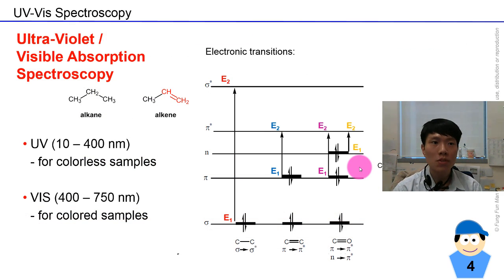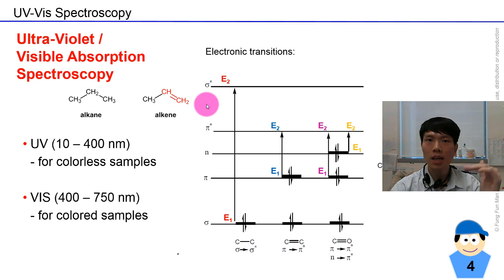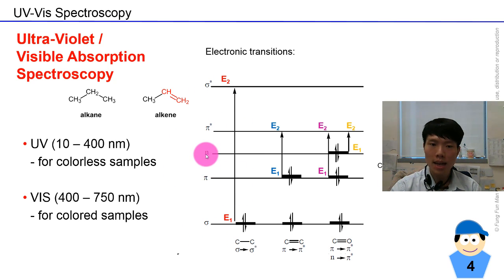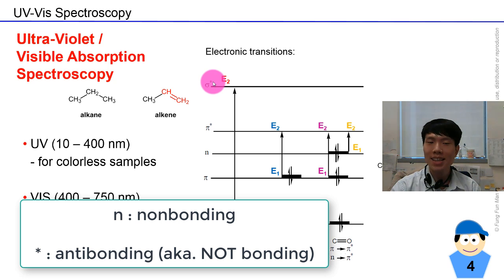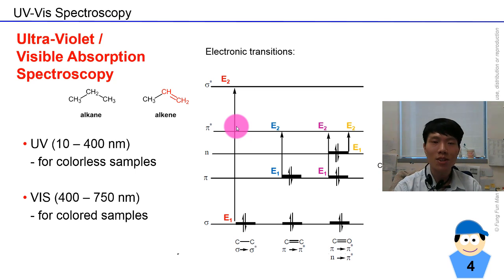Now we go on to UV-visible spectroscopy. This graph shows the relative energy levels of different orbitals in the system. UV-visible spectroscopy is about the promotion of electrons from a lower to higher energy state. On this axis you see sigma, pi, N (which stands for non-bonding), pi-star (the anti-bonding pi orbital), and sigma-star (the anti-bonding orbital of the sigma bond). At this level, we look at only the sigma bond and the pi bond.